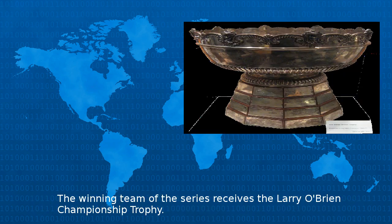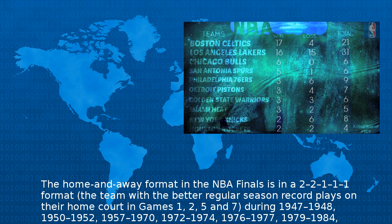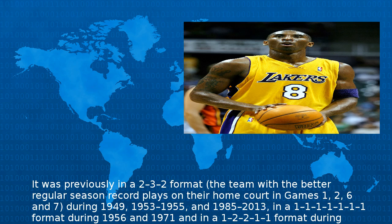The winning team of the series receives the Larry O'Brien Championship Trophy. The home and away format in the NBA Finals is in a 2-2-1-1-1 format, where the team with the better regular season record plays on their home court in games 1, 2, 5, and 7. This format was used during 1947–1948, 1950–1952, 1957–1970, 1972–1974, 1976–1977, 1979–1984, and 2014–present.